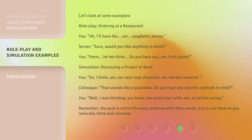Simulation: discussing a project at work. You: 'So, I think, um, our next step should be, uh, market research.' Colleague: 'That sounds like a good idea. Do you have any specific methods in mind?' You: 'Well, I was thinking, you know, we could start with, um, an online survey.' Remember, the goal is not to fill every sentence with filler words, but to use them as you naturally think and converse.